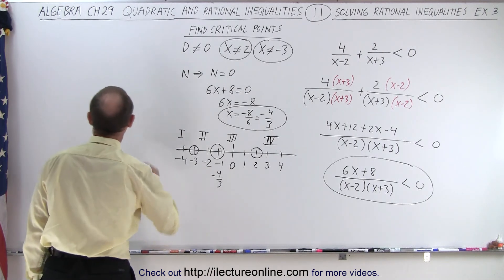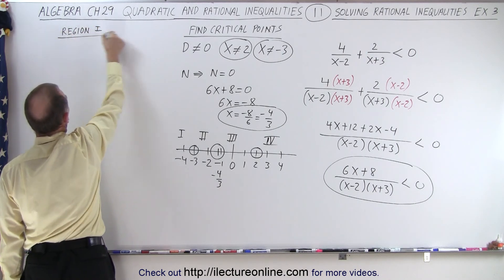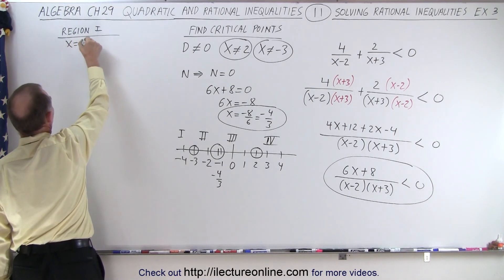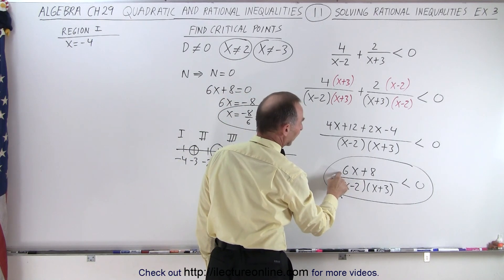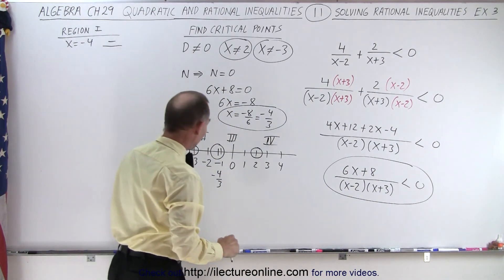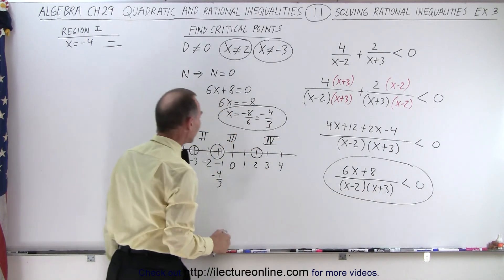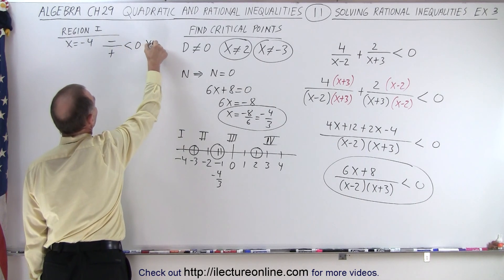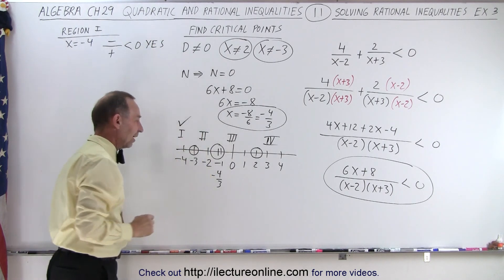Let's test all our regions to see what we get. Region 1: let's pick x equals negative 4. Then negative 4 times 6 is minus 24, which makes the numerator negative. In the denominator, if x equals negative 4, that's a negative number and that's a negative number — negative times negative is positive, making the denominator positive. Is that less than 0? Yes, because a negative divided by a positive is negative, which is less than 0. So region 1 satisfies the inequality.